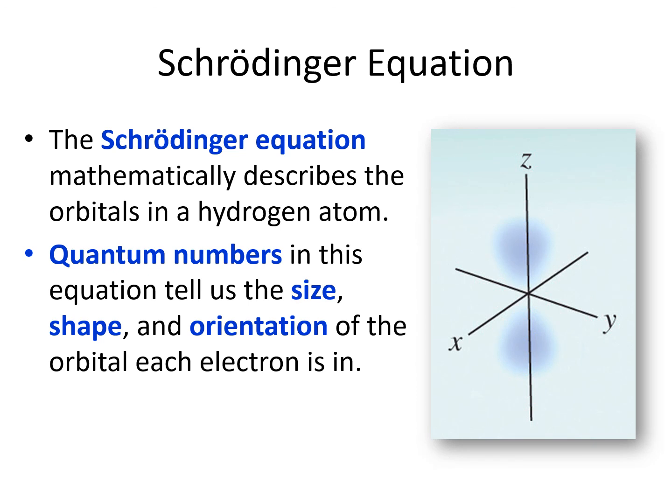We use an equation called the Schrödinger equation to mathematically describe orbitals. This equation can be turned into a sort of graph to give us a picture like the one on this slide, showing where the electrons are likely to be found. We are not going to go over the whole Schrödinger equation, but we are going to focus on the numbers that go into the equation, quantum numbers. The quantum numbers tell us very useful information about size, shape, and orientation of the orbitals the equation describes for each electron in an atom.